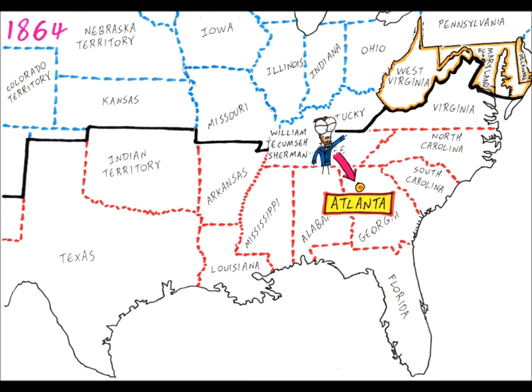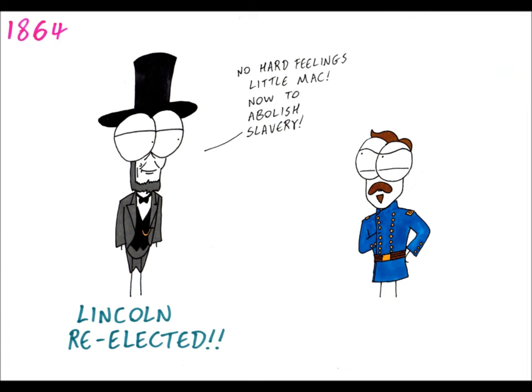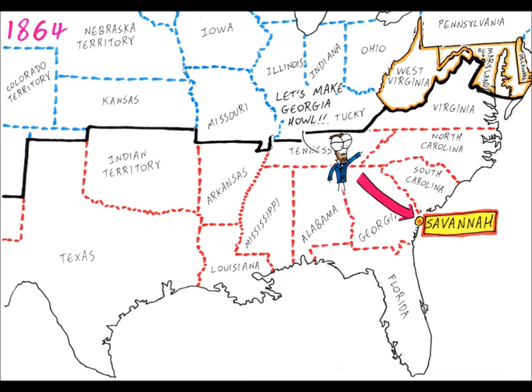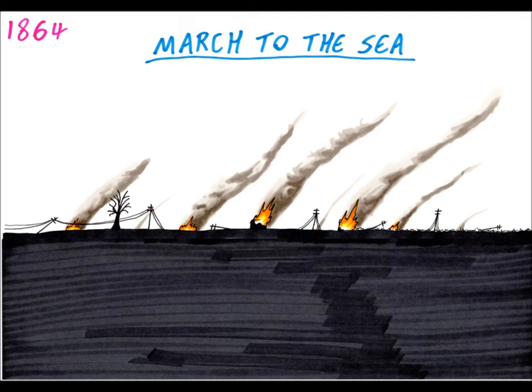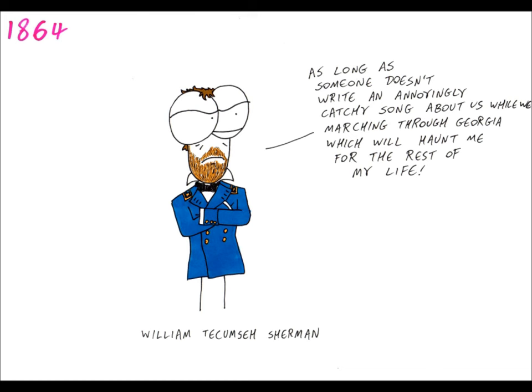Meanwhile, Union forces under William Tecumseh Sherman moved from Chattanooga and captured Atlanta, Georgia in September 1864. Other Union forces swept along the Shenandoah Valley, fighting the other remaining Confederate army, ultimately defeating them. That November, Abraham Lincoln was re-elected President, defeating Democrat candidate George McClellan. Sherman marched his army through Georgia towards Savannah, destroying industry, infrastructure and civilian property along the way — the March to the Sea. Sherman captured Savannah on December 21st and offered it as a Christmas present to the newly elected Lincoln.